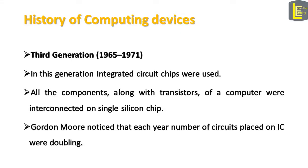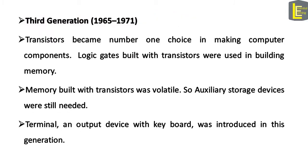The third generation of computers starts from 1965 to 1971. In this generation, integrated circuit chips were used — all the components, including transistors, were interconnected on a single silicon chip. Gordon Moore, a computer scientist, noticed that each year the number of circuits placed on an IC was doubling. His observation is known as Moore's law. Transistors became the number one choice in making computer components. Logic gates built with transistors were used in building memory and other circuits of the computer. Although memory built with transistors was really fast, it was volatile, so auxiliary storage devices were still needed. Terminals — an input and output device with a keyboard — were introduced in this generation.